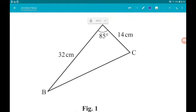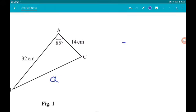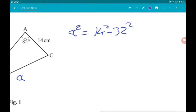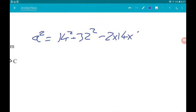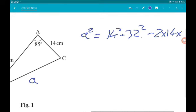So if we call this side a, by the cosine rule, we know that a squared is equal to 14 squared plus 32 squared minus 2 times 14 times 32 times cos of 85.